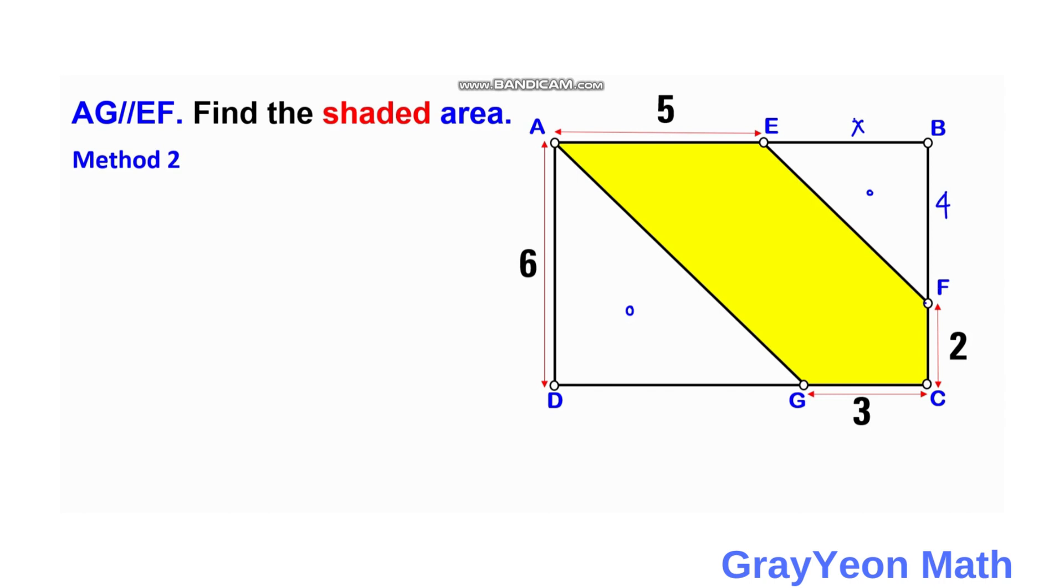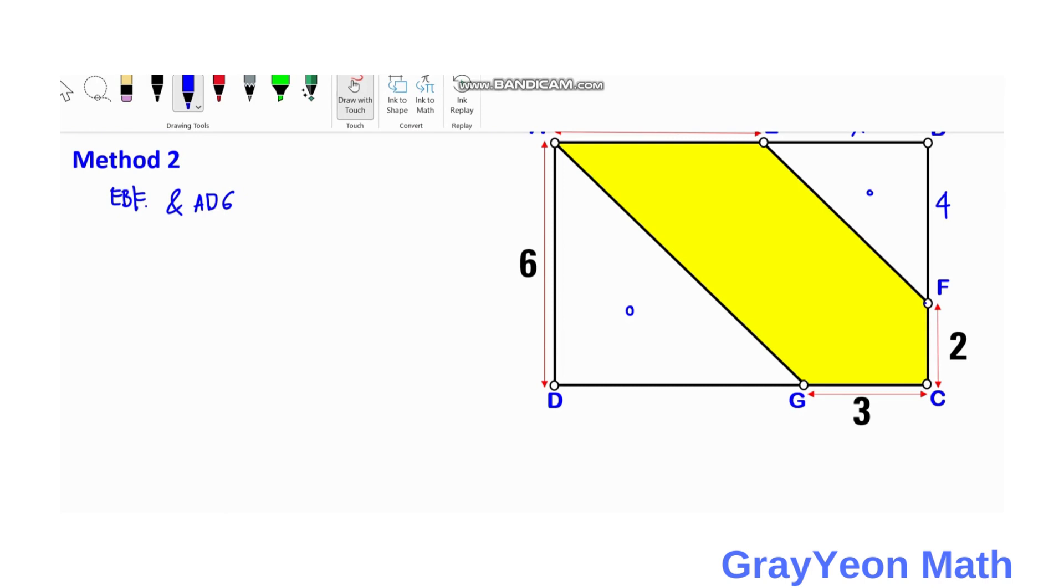So this length D, G, we compare this E, B, F with A, D, G. So E, B, F and A, D, G.